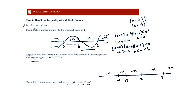The negative regions are between minus one and zero, and between two and seven — excluding the endpoints since we have strict less than zero. Between minus one and zero there are no integers. Between two and seven, x can be 3, 4, 5, or 6 — that is four integer values. So x can take four integer values in total.